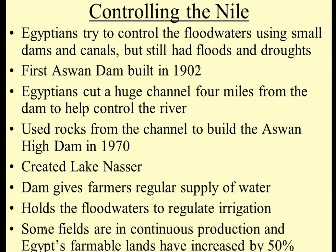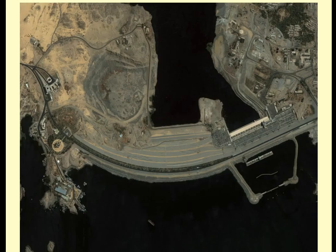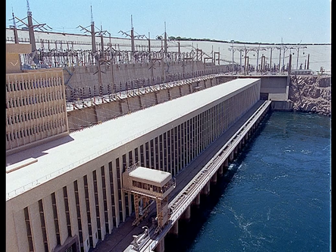Control of the Nile River: they built dams — the first in 1902, the second in 1970. It helped control the severe flooding that happens from time to time. You're looking at a picture of the Aswan High Dam — river on one side, lake on the other, used for hydroelectricity and controlling floods.